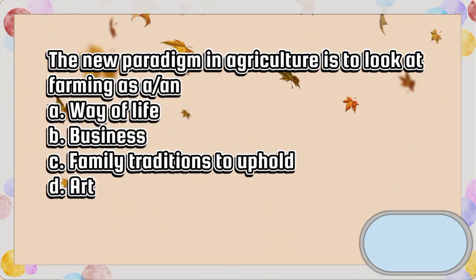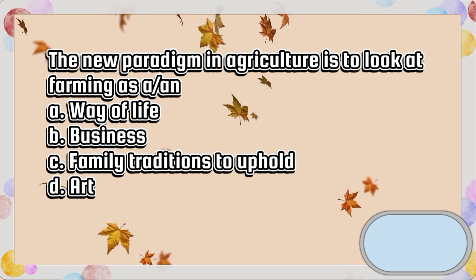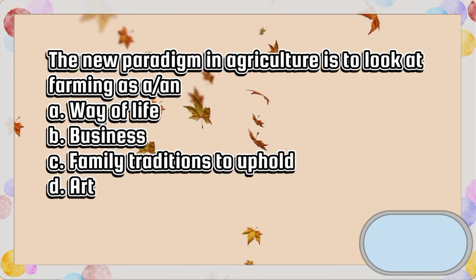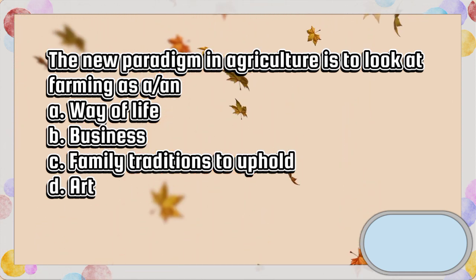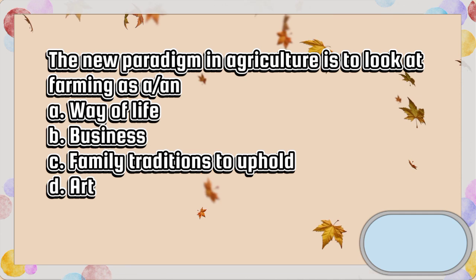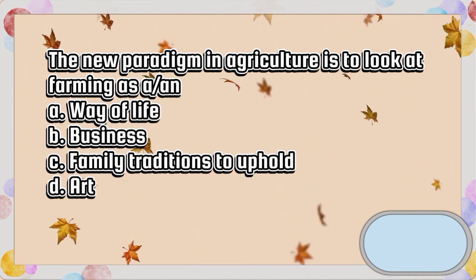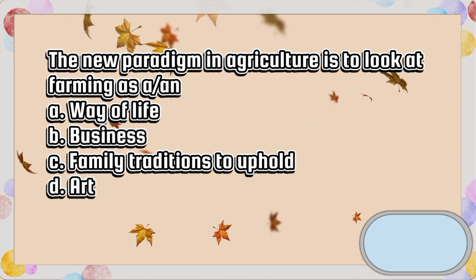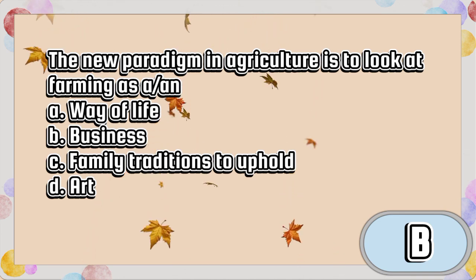The new paradigm in agriculture is to look at farming as: A. A way of life, B. Business, C. Family traditions to uphold, D. Art. The answer is letter B.